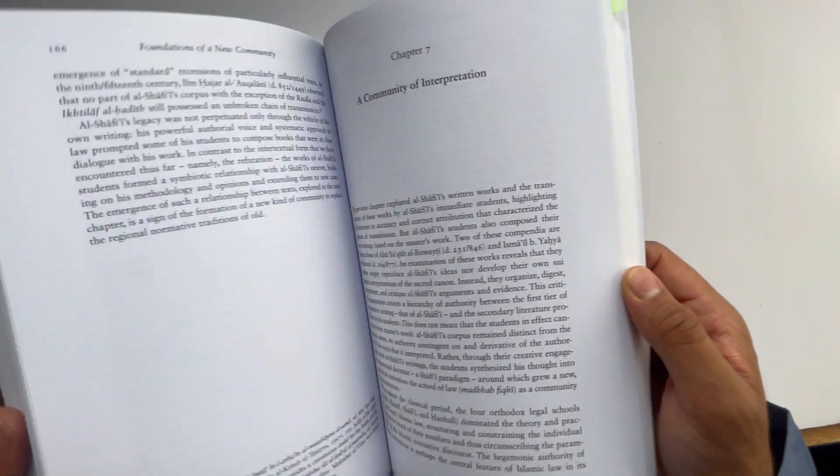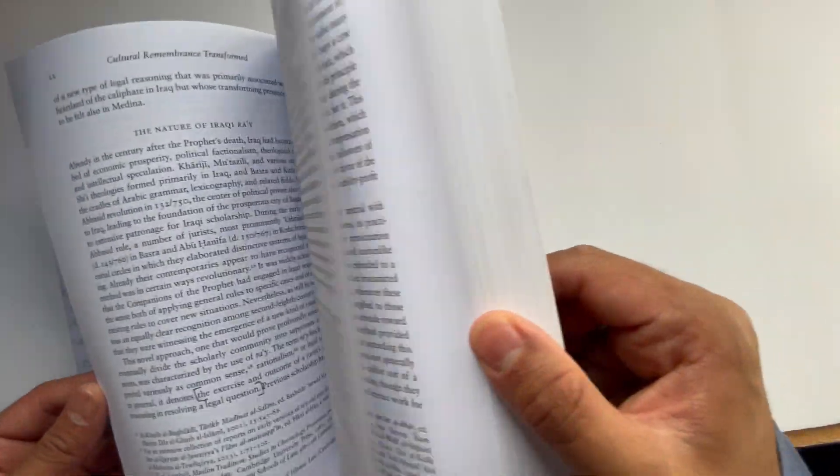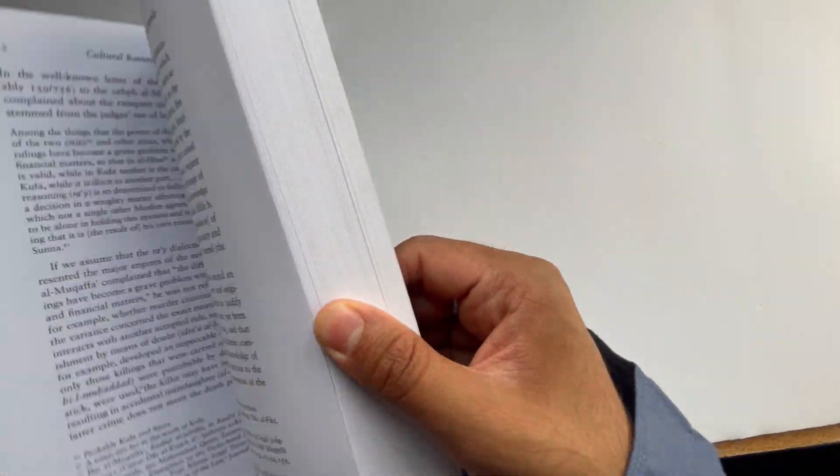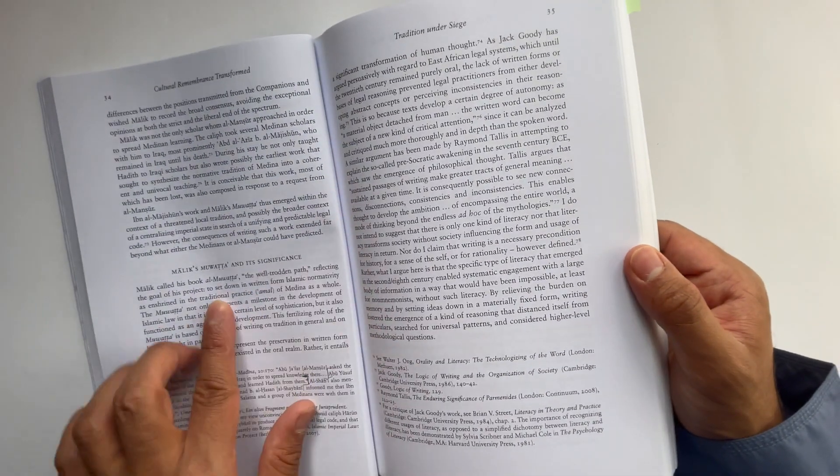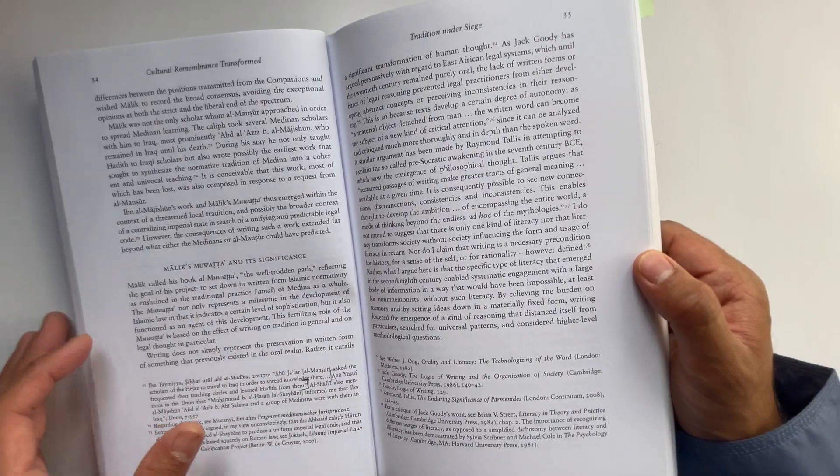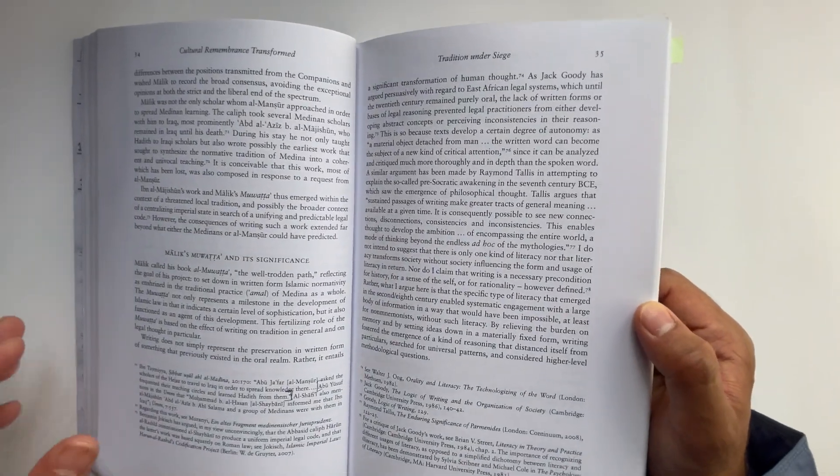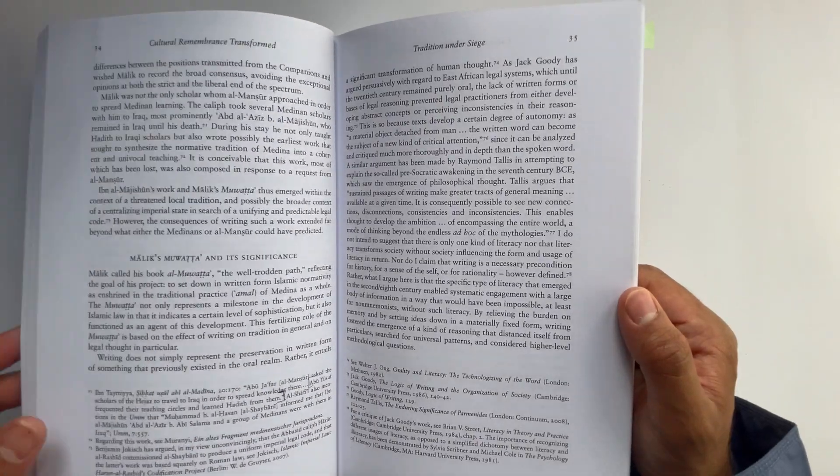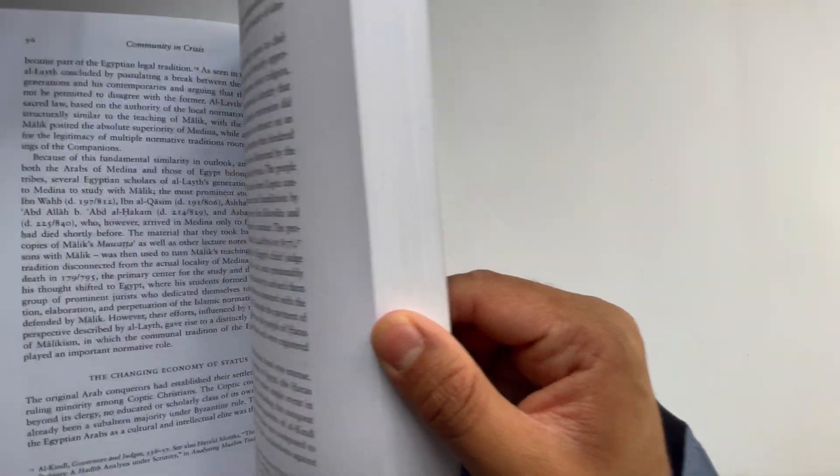So, if you can, this book is available on Amazon. I will put the link in the description below if you want to have a look at it. It discusses the difference of opinion between the Ahl al-Ra'i and Ahl al-Hadith really well. It speaks about Imam Malik's muwatta and what he was trying to do and essentially how Imam al-Shafi'i had adopted or he was in line with the approach of Imam Malik before he came to Baghdad.